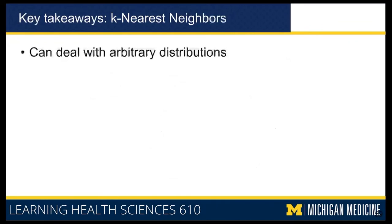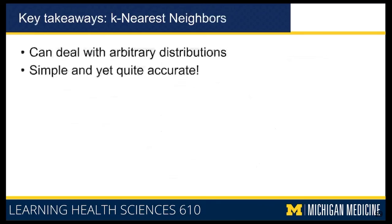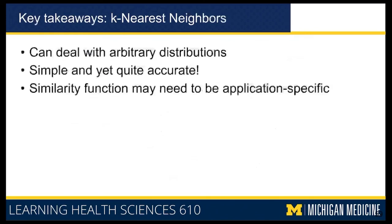The key takeaways from the nearest neighbor classifier: it is a lazy learner, meaning it doesn't do much during the learning phase — it just memorizes the training data. But it can deal with arbitrary distributions because it can expand its similarity function definition depending on how dense your neighbors are. If neighbors are very close, your circle of five is extremely small; if they are far away, your circle is large, but you'll still find five neighbors. It's a very simple model and yet pretty accurate, especially if your assumption that a label is similar to the labels of its neighbors holds true.